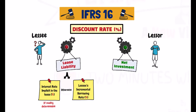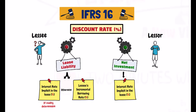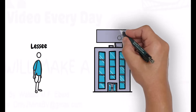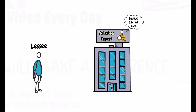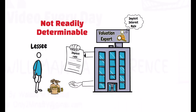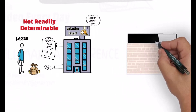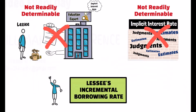Otherwise, the lessee should calculate its incremental borrowing rate to be able to measure his lease liability. But for the lessor, he is required to always use the interest rate implicit in the lease when calculating the net investment in the lease. The term 'readily determinable' lends itself to some interpretations. Sometimes lessees hire a valuation expert to figure out the interest rate implicit in the lease, like in the real estate business. Some practitioners say that interest rates implicit in the lease determined based on valuation experts — as well as rates whose determination involves significant estimates and assumptions — are rates that are not readily determinable. In this case, the lessee should be using its incremental borrowing rate.